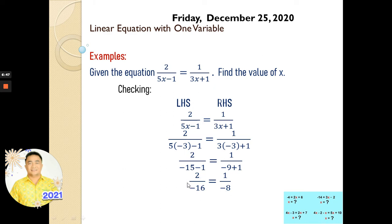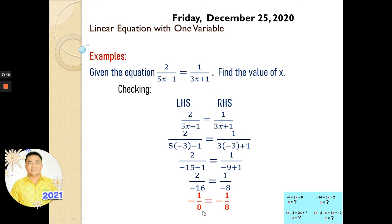Now, 2 over negative 16 simplifies to negative 1 over 8, and the right side is also negative 1 over 8. The left-hand side equals the right-hand side, so our value of x is correct — it is really negative 3. If you don't understand, you can watch the video again and try to figure out why the sign is negative or positive.